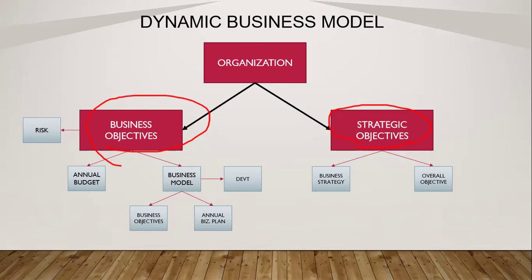Whether business or strategic objectives, there is always risk. Risk management aims to make a full contribution to the realization of these business or strategic objectives. To clarify the difference between the two: business objectives are technically related to your annual budget — this is where your sales, income, cost of sales, and expenses are included.